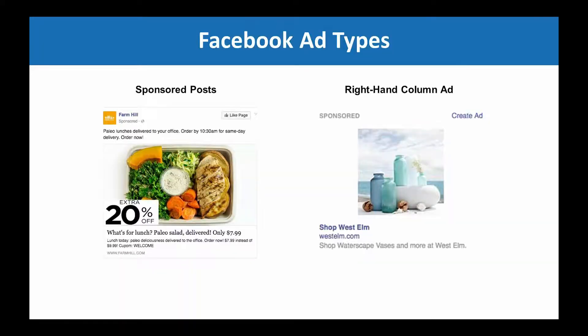You have the sponsored post on the left and then the right-hand column on the right. The sponsored post will show up in their news feed, while the right-hand column stays on the right side — more like a Google ad, a traditional digital ad. They're very similar in terms of how you can create demographics.